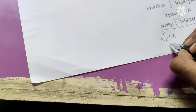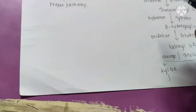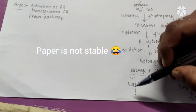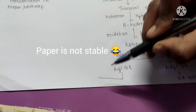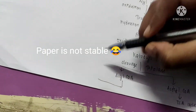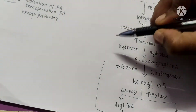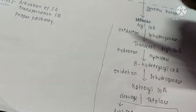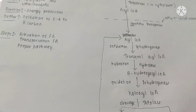The acetyl CoA produced then undergoes the TCA cycle for energy production. The acyl CoA that is produced is not stable and feeds back into the same beta oxidation pathway, repeating the cycle until the fatty acid is fully broken down.